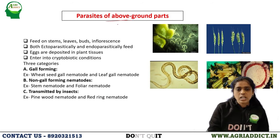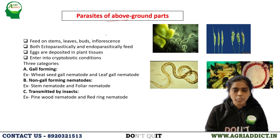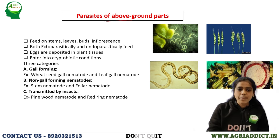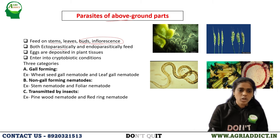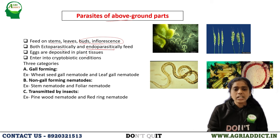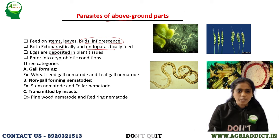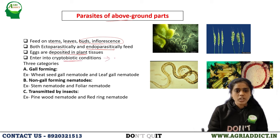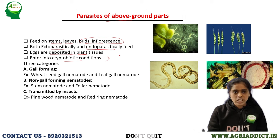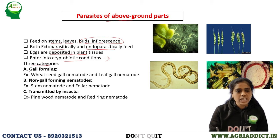Parasites of above-ground plants mainly feed on stems, leaves, buds, and inflorescence. Feeding may take place ectoparasitically or endoparasitically, and eggs are deposited in the plant tissue. Most foliar nematodes can enter cryptobiotic conditions to survive under extreme environmental conditions. They have been classified into three categories: gall-forming, non-gall forming, and nematodes transmitted by insects.